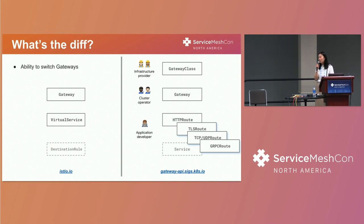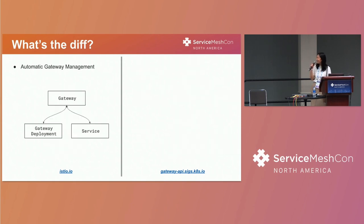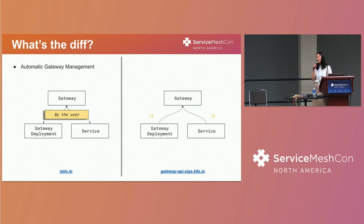You also have this newfound ability to switch gateways because it is a standardized API. So instead of sticking to one, now you have the ability to port over. If you want to try a Contour implementation, you can. Or maybe NGINX — you can. And it's really easy. Lastly, something cool between Istio and the Gateway API is automatic gateway management. On the Istio side, you get your gateway deployment and service when you install Istio onto your cluster, but if you want to add a new port, you'd have to redeploy and reconfigure manually — which is a painful point. But with the Gateway API, it's the source of truth and automatically does it on your behalf, which is such a nice user experience.